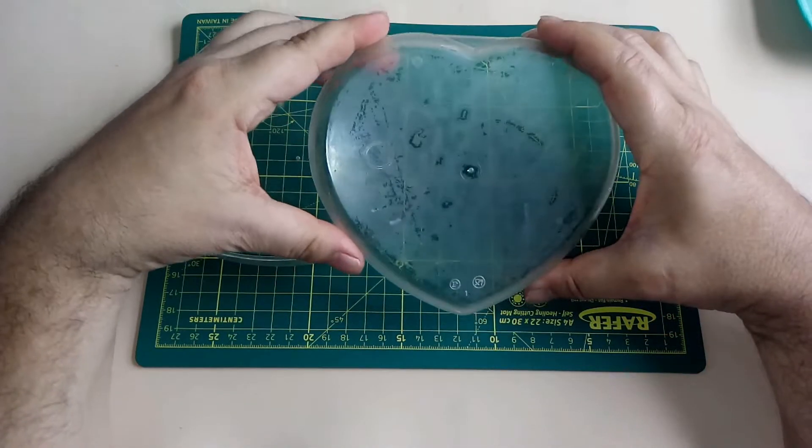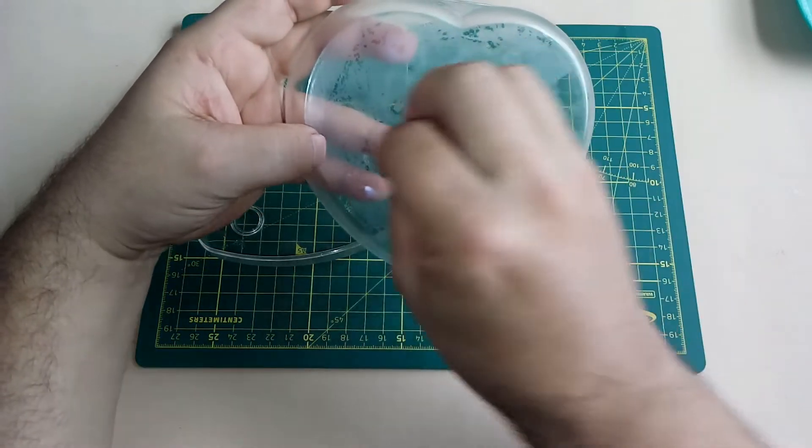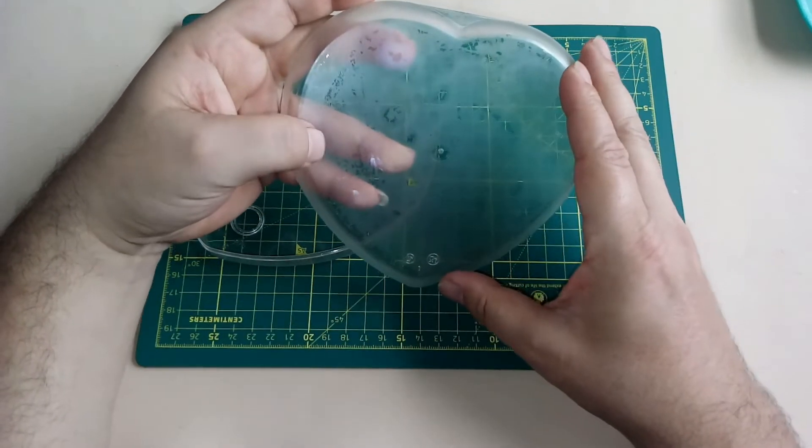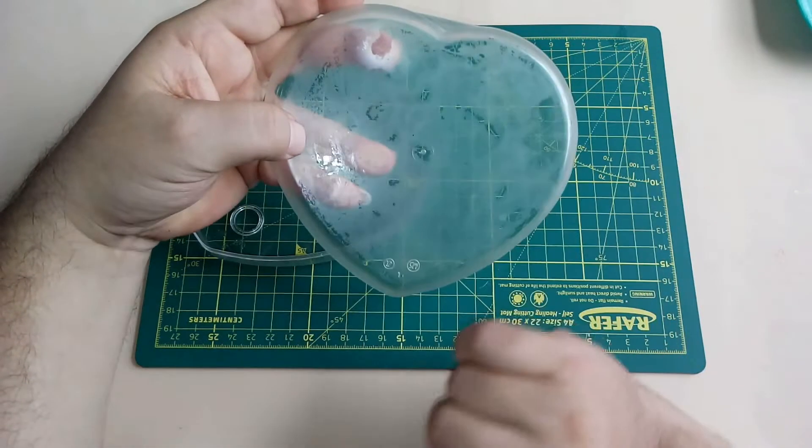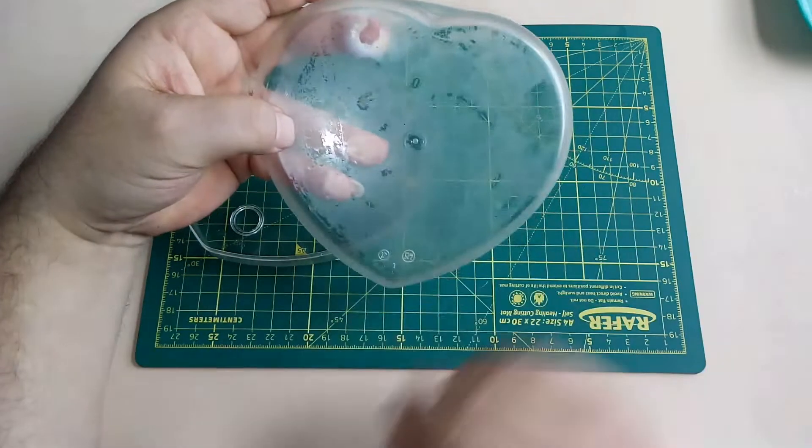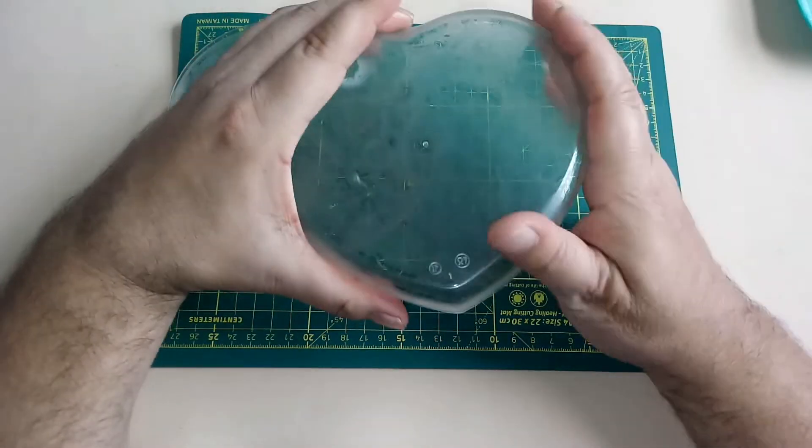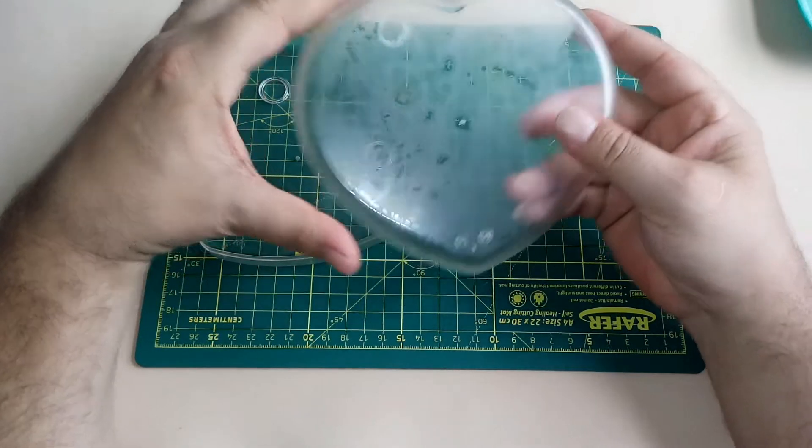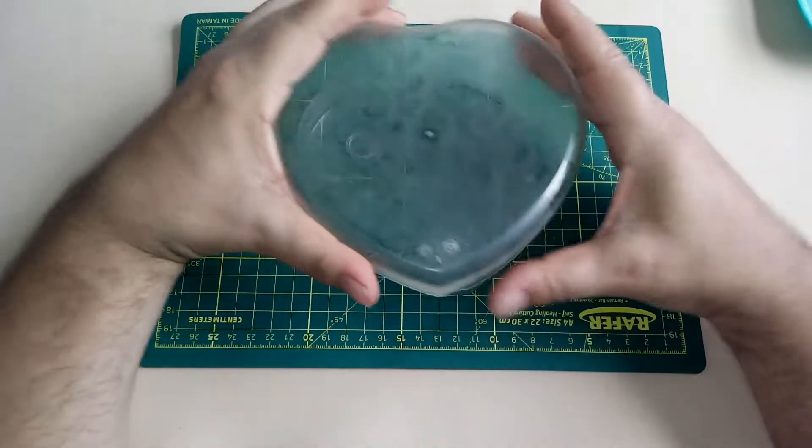Es una superficie muy lisa. La cola vinílica al momento de secar va a querer abrirse formando lagunas. Esto es normal, no se asusten. Una vez que eso esté seco, le dan una segunda mano y ahí van a ver que van a lograr que todo quede opaco. De esta forma me aseguro que la porcelana quede bien agarrada a esta superficie.